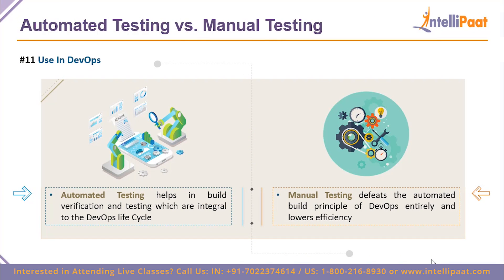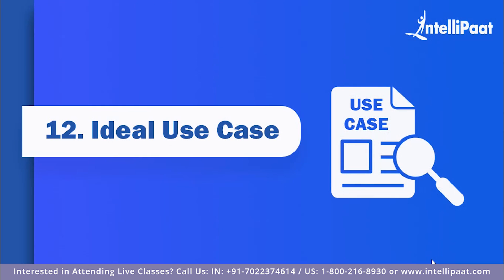In DevOps, automated testing plays a key role — it helps with build verification and build testing, which are integral to the DevOps lifecycle. Manual testing defeats this purpose because it slows down the automated build principles of DevOps, lowers efficiency, takes more time, and consumes more resources.